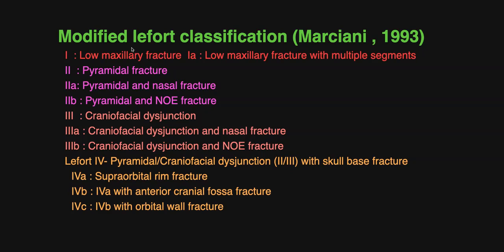Type 1 is a low maxillary fracture. When the low maxillary fracture is in multiple segments, it is type 1a. Type 2 is a pyramidal fracture. Type 2a is pyramidal fracture plus nasal fracture. Type 2b is pyramidal fracture and naso-orbito-ethmoid (NOE) fracture. Type 3a is craniofacial disjunction plus nasal fracture. Type 3b is craniofacial disjunction and naso-orbito-ethmoid fracture. Type 4a is pyramidal fracture or craniofacial disjunction with a skull base fracture, with the supraorbital rim involved. Type 4b involves the supraorbital rim plus anterior cranial fossa. Type 4c involves the supraorbital rim, anterior cranial fossa, and orbital walls.